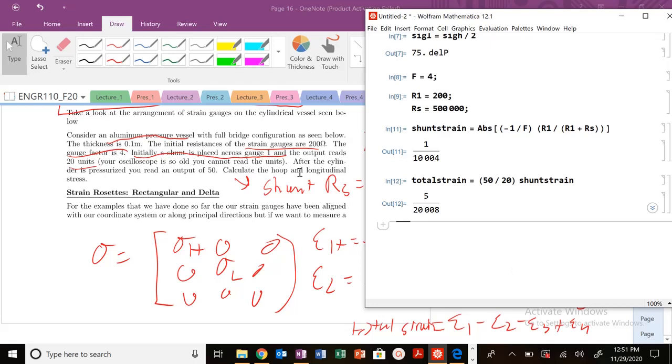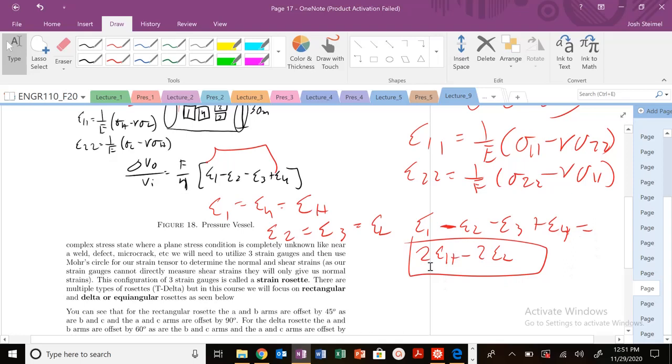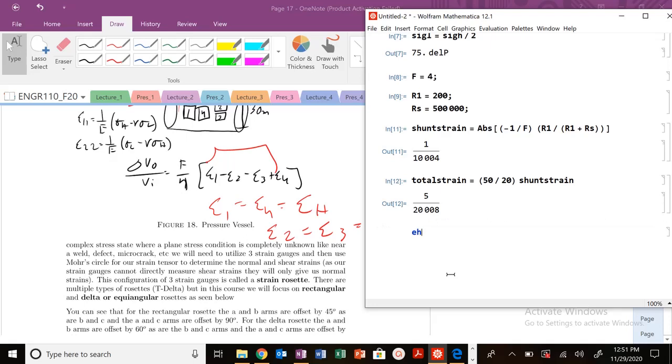The question is asking us, we need to calculate the hoop and longitudinal stress from this value. Well, I know that I just wrote an expression that my total strain, ε₁ minus ε₂ minus ε₃ is going to be 2εH minus 2εL. So let's write out those values. εH is going to be equal to 1 divided by Y times sig H minus nu times sig L.